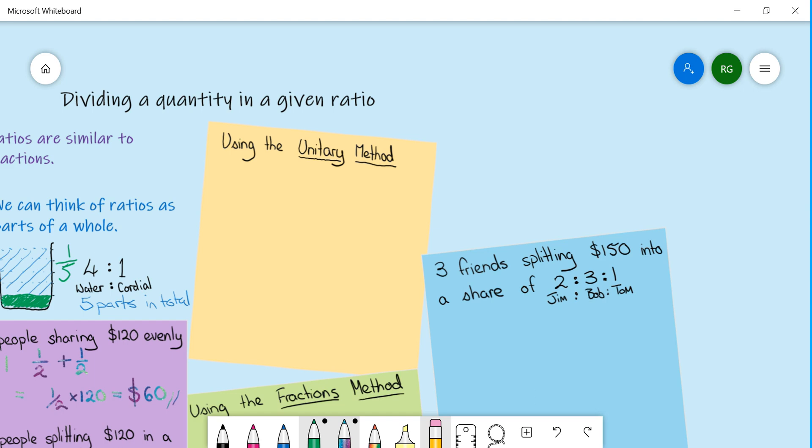Now we're going to use the method called the unitary method. The wording around the word unit means one. So in this case we're going to work out what one part of the ratio is worth.